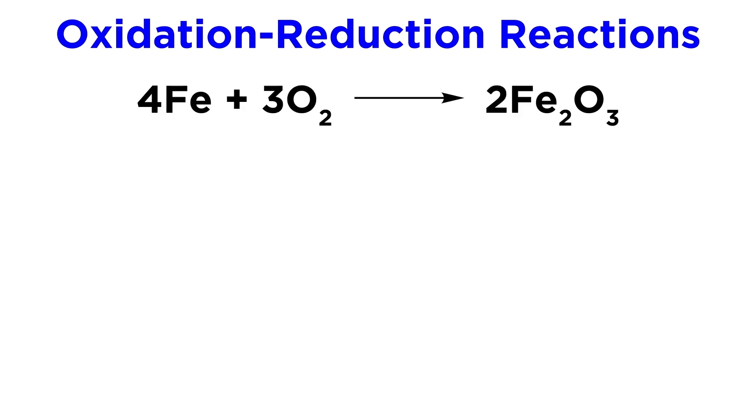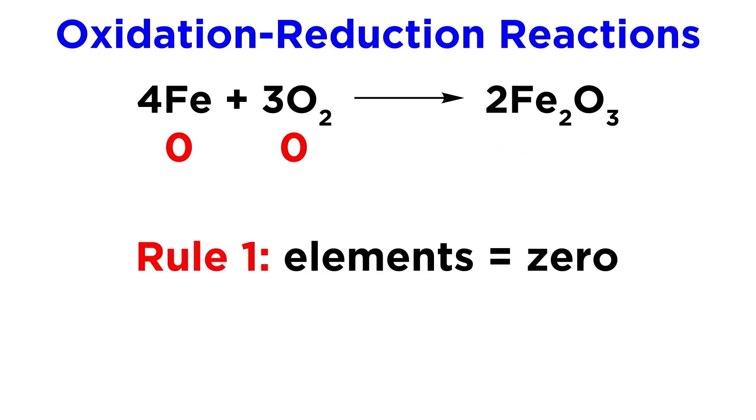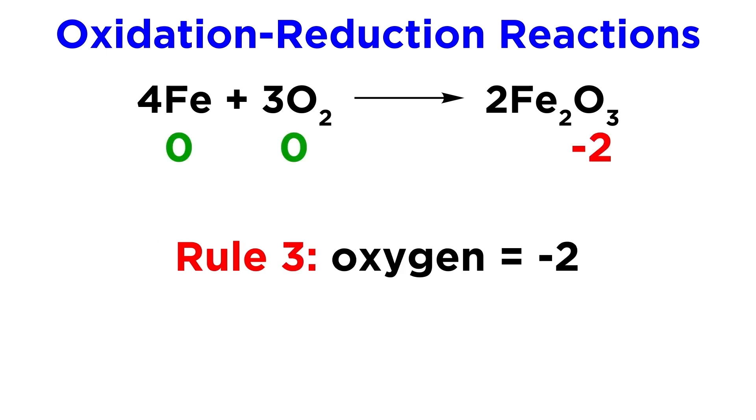Let's now use oxidation numbers to examine a redox reaction. Take this one here where elemental iron reacts with oxygen to form iron oxide. On the left side we have two elements, so these will both be zero. Then on the right, as we said, oxygen is almost always minus two.